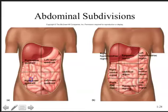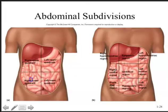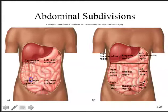The abdominal pelvic region can also be divided into a tic-tac-toe nine-region grid: the right and left hypochondriac regions (under the chondral cartilages connecting ribs to sternum), the epigastric region (above the stomach), the right and left lumbar regions (lower back), the umbilical region (containing the navel), the right and left iliac regions (near the ilium bone, part of the os coxa which includes ilium, ischium, and pubis), and the hypogastric region below the stomach.